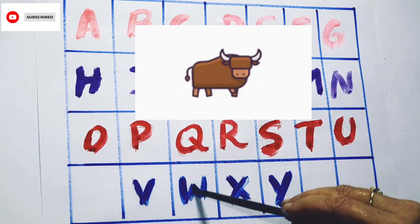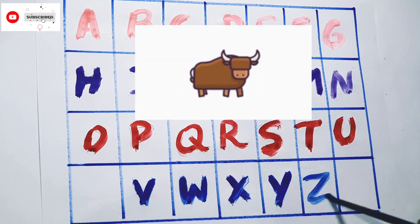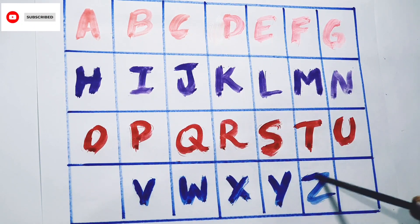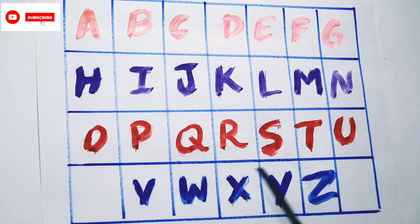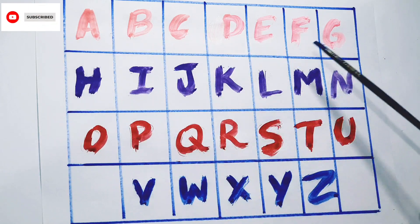Y for yak. Z for zebra. Pink color, purple color, red color, and blue color. A B C D E F G.